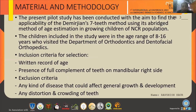The inclusion criteria included written record of age and presence of a full complement of teeth on the mandibular left and right side. The exclusion criteria excluded any disease that could affect the general growth and development of an individual, as well as distortion and crowding of the teeth.